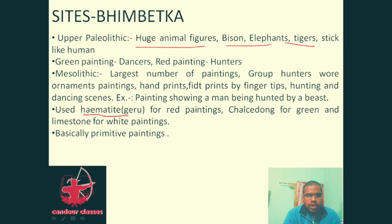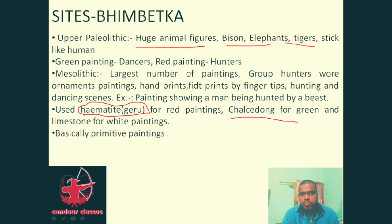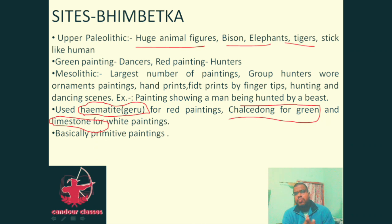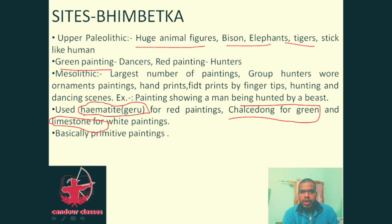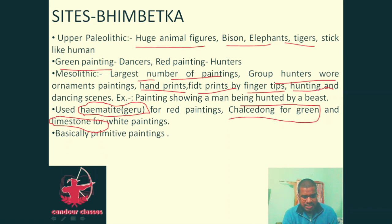Hunting paintings are done in red. Red paintings were painted using hematite, known as geru in Hindi. For Chalcolithic paintings, green color was obtained from chalcedony material, and white paintings used limestone. Red was for hunting scenes, green for dancing depictions.